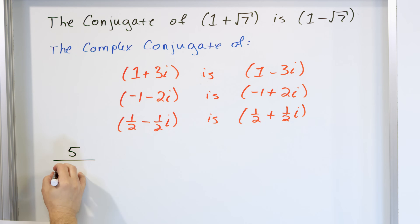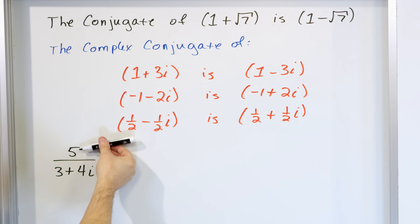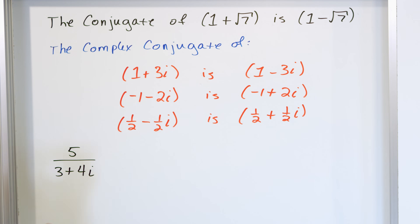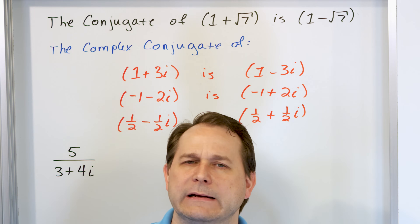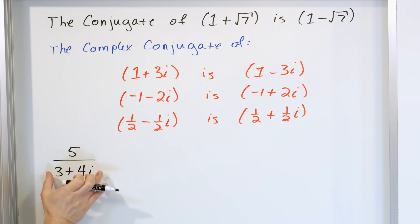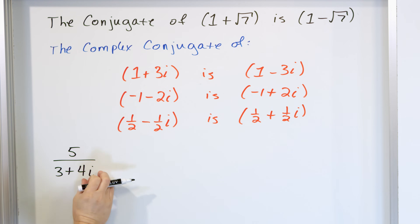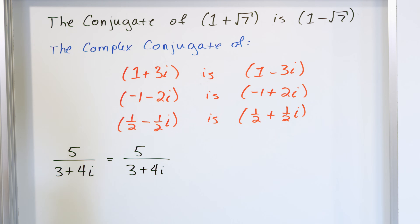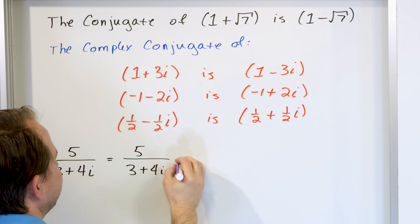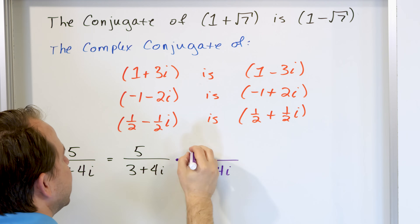So for instance, five over three plus four i. There's a division going on with a complex number — five has a real part of five and imaginary part of zero, and you're dividing by a complex number with a real and imaginary part. How do you do that division? We don't write a division symbol. First try to simplify anything in the top and bottom — there's nothing we can do — so we eliminate any imaginary numbers in the bottom by multiplying by the complex conjugate, which is three minus four i.